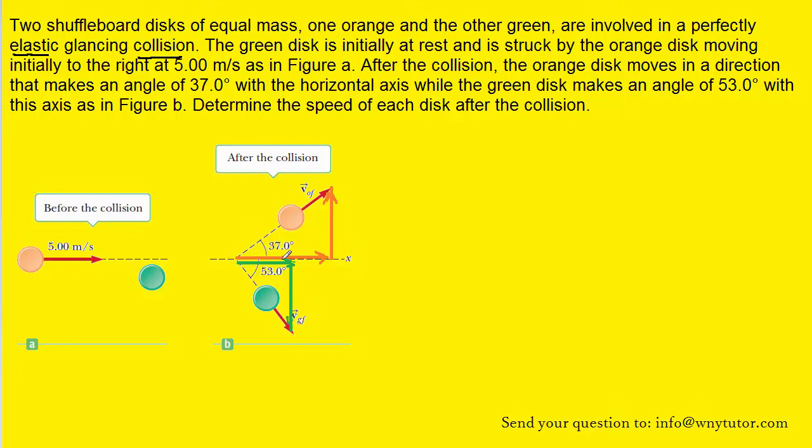So for the orange disk, we have labeled the x component with a rightward vector and the y component with an upward vector. Given the 37 degree angle, we should be able to see that the velocity of the orange puck in the y direction can be represented as v naught f times the sine of 37. Notice the diagram labeled the velocity of the orange puck as v naught f, and that's where we're getting that v naught f here.